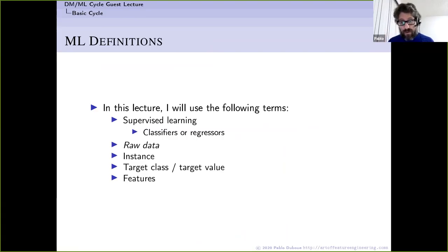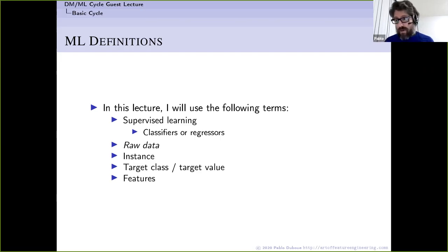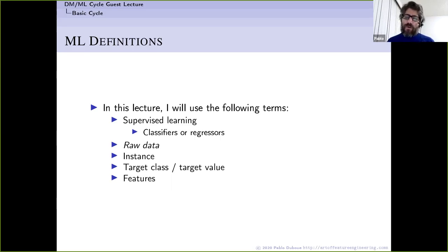In this lecture I'll use the following terms: supervised learning, training a classifier or regressor — something that divides instances into known classes or predicts a floating point value. We distinguish raw data from features, which are computed from the raw data through additional steps. Then we have instances, the target class, and the target value.